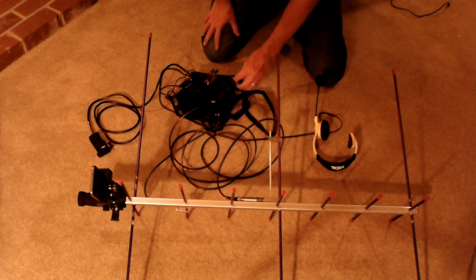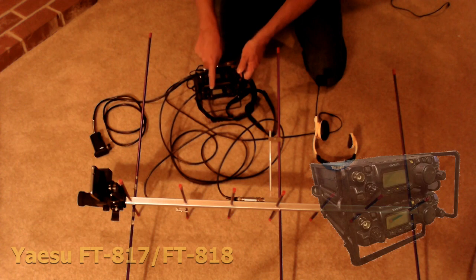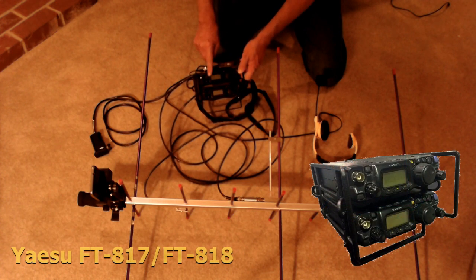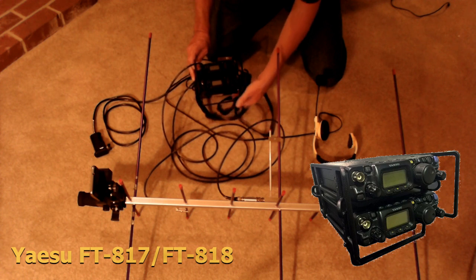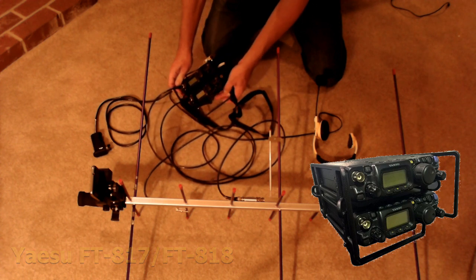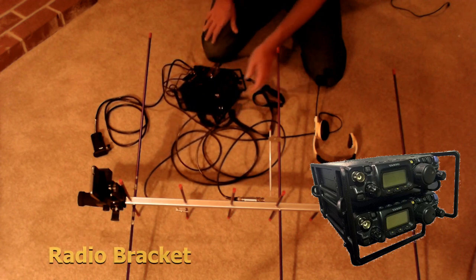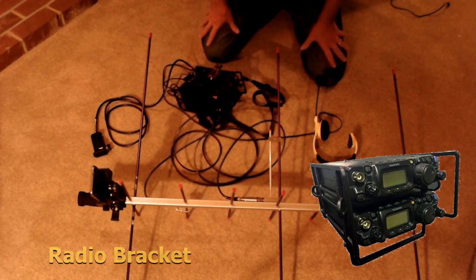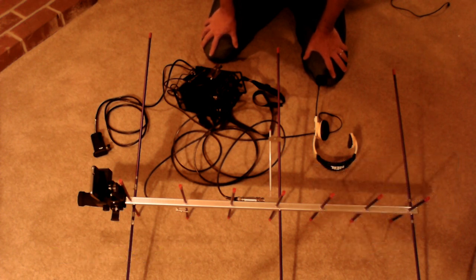The next component I want to show are the radios. I have a Yaesu FT-817 and an FT-818. I use one for transmit and one for receive. I have these held together with a bracket, and as you can see, this is a really solid bracket. All these components are listed in the description section with sourcing information.